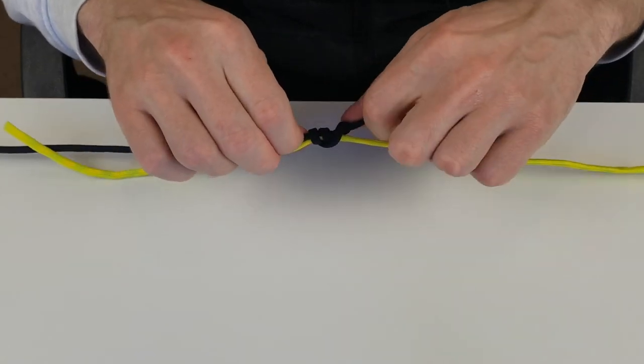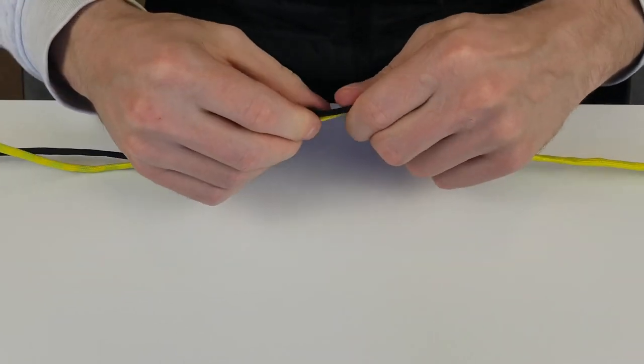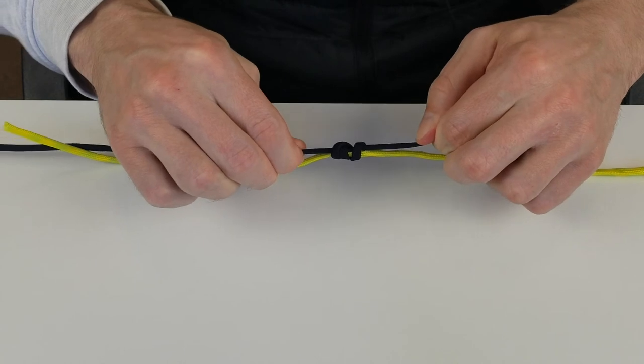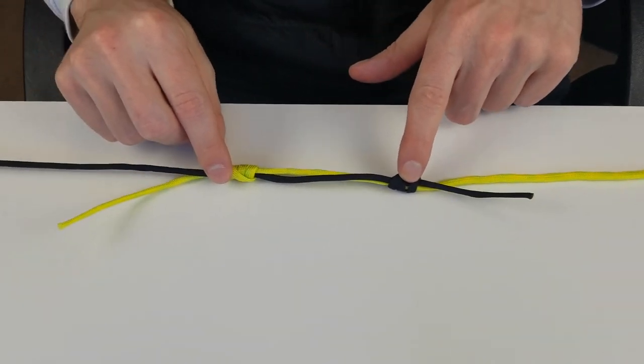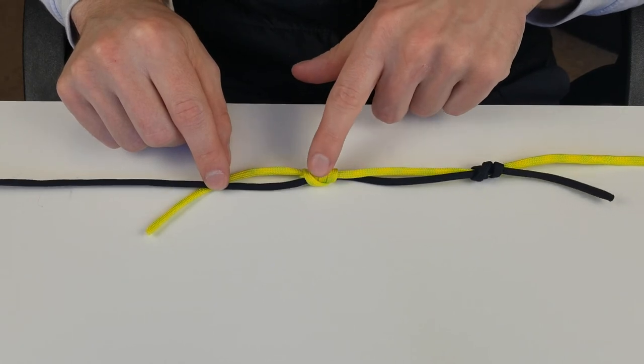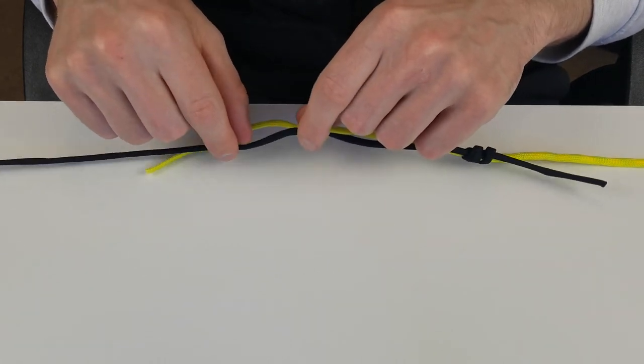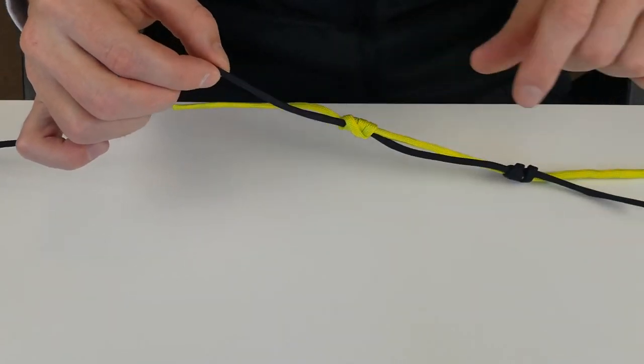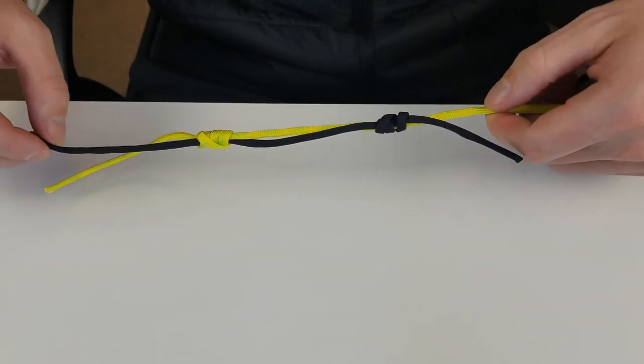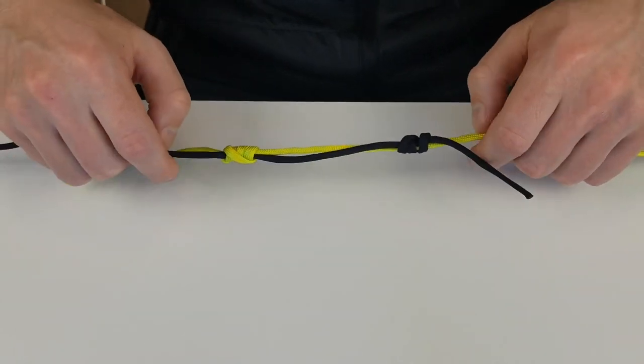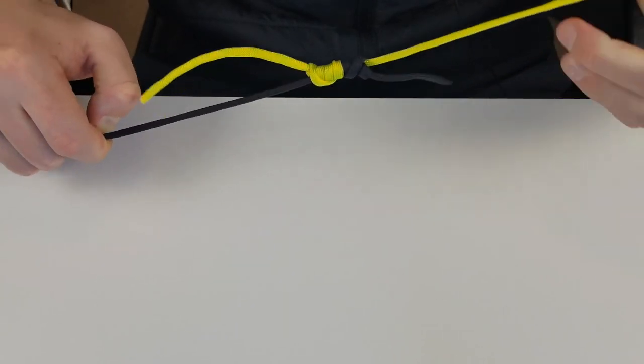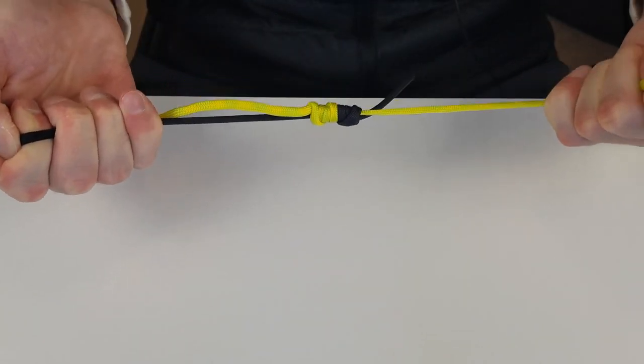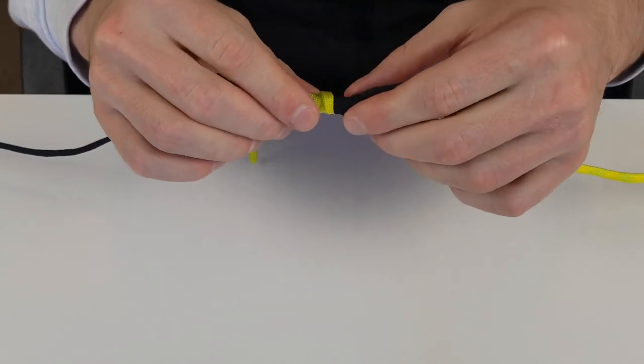Again moisten this with some water or spit, cinch it down, pull it down nice and tight. You'll have your braided knot here and your monofilament knot here. Then grab the main part of the braid and the main part of the monofilament and start pulling in opposite directions. The lines will come together, nice and snug.